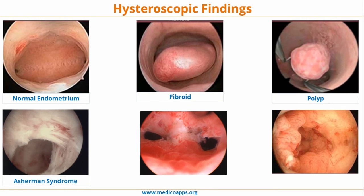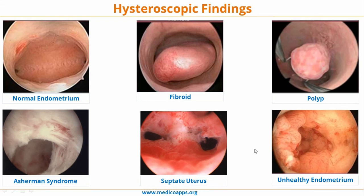This is what Asherman's syndrome looks like hysteroscopically. This is a septate uterus — there is a single band with no other fibrous bands. You can see the openings into the upper part of the uterus. Finally, this is what an unhealthy endometrium looks like, which would warrant a biopsy.